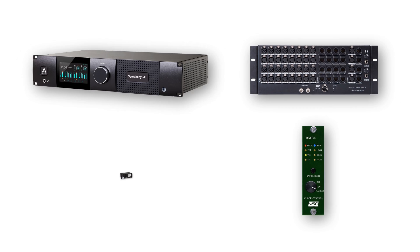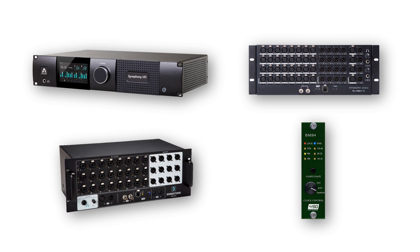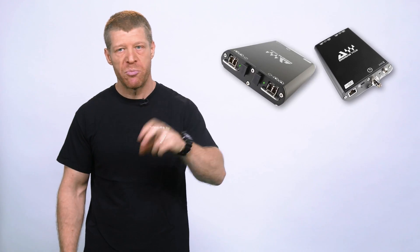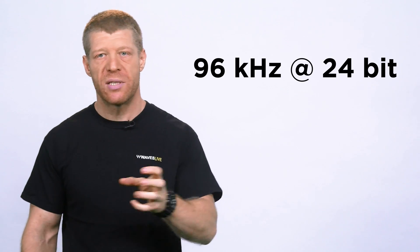A SoundGrid I/O device is an audio interface. It converts any audio signal — whether analog or digital — to the SoundGrid audio protocol. SoundGrid I/Os range from two-input interfaces such as the DigiGrid-D to robust 128-channel audio interfaces such as the DigiGrid MGB and MGO SoundGrid interfaces. SoundGrid I/O devices support sample rates up to 96 kHz at 24-bit, and are connected to the SoundGrid network via Ethernet cables.